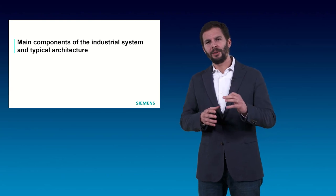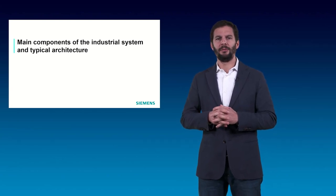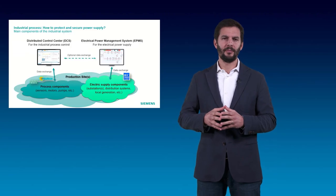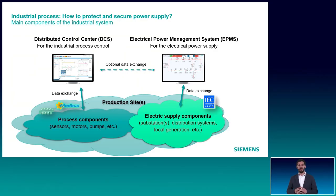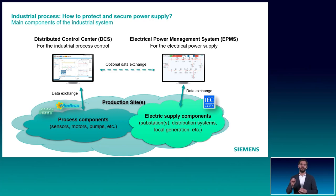Understanding the main drivers, let's take a look at the typical architecture and main components of the industrial system. As described in the picture, in an industrial facility there are two worlds. The first is the DCS, Distributed Control System, which is responsible for the main processes within the plant — for example, control of motors, pumps, compressors, etc. But when it comes to electrical energy and enabling reliable operation of the facility, we need the EPMS, Electrical Power Management System. Electrical switch gears and protection relays belong to the right side of the picture.